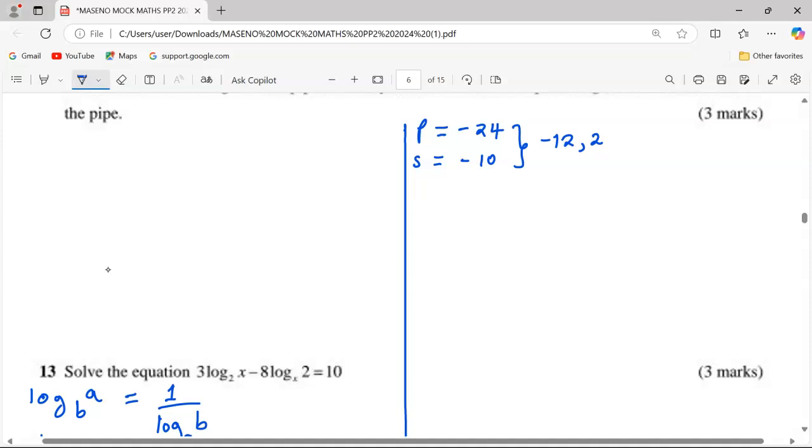So the equation is now 3t² - 12t + 2t - 8 = 0.